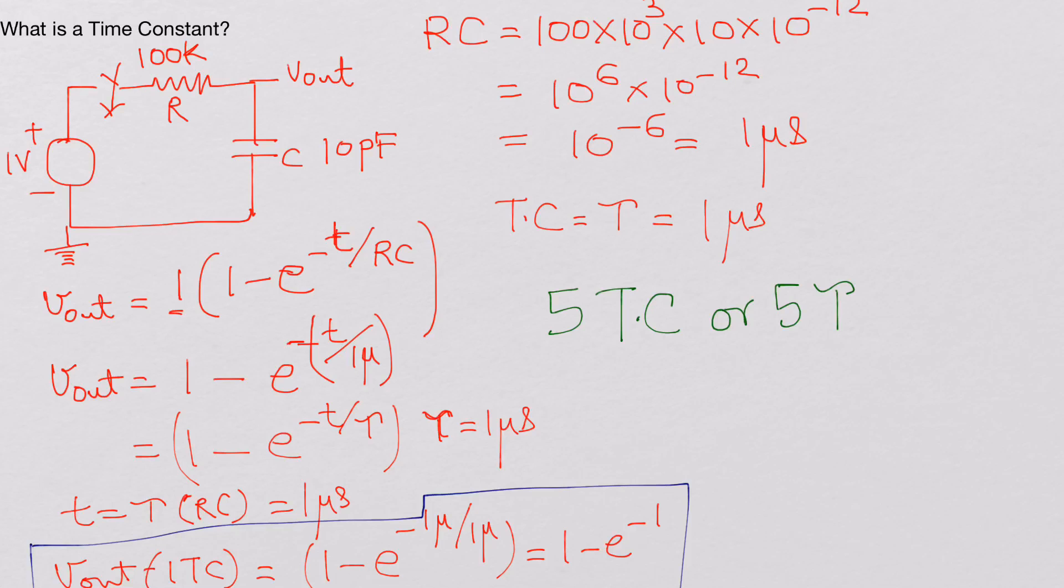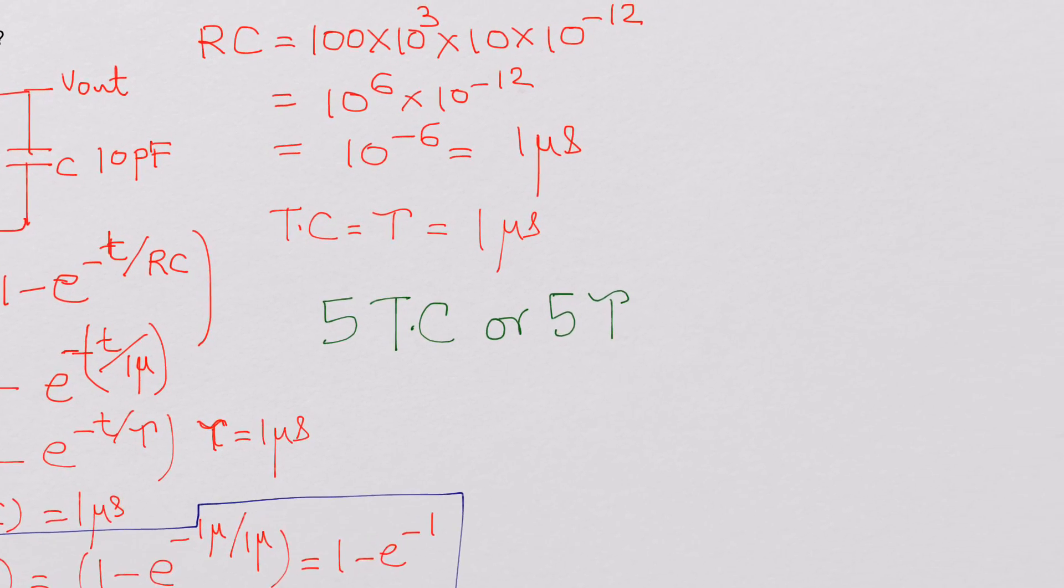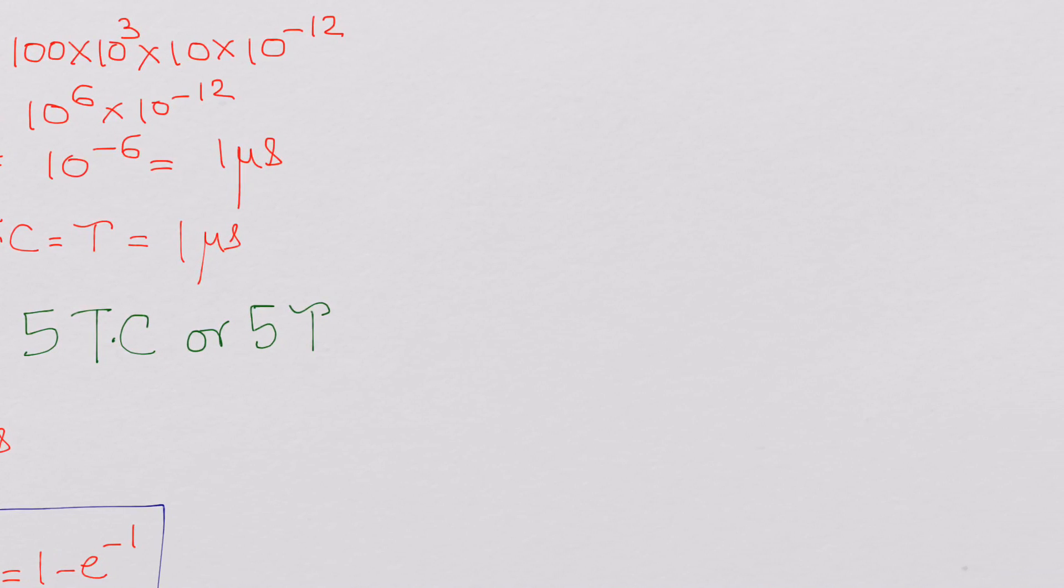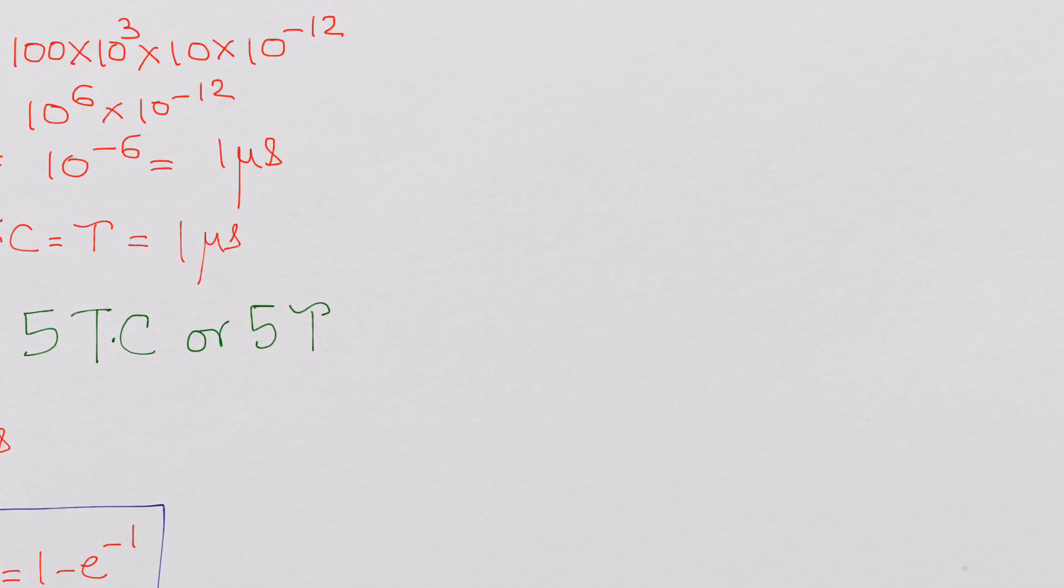So now for RL circuits. If you take a low pass filter formed by an RL circuit, you have an L and you have an R. Here R and L. Assume here in this case R is again 100 kilo ohms.